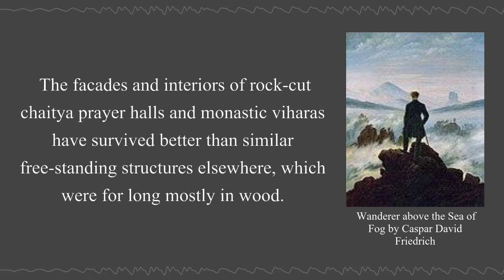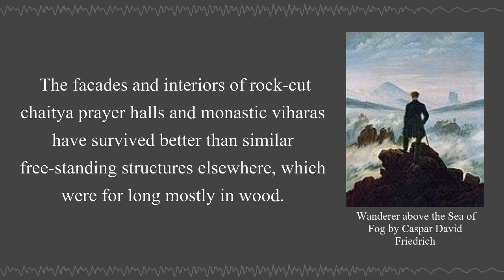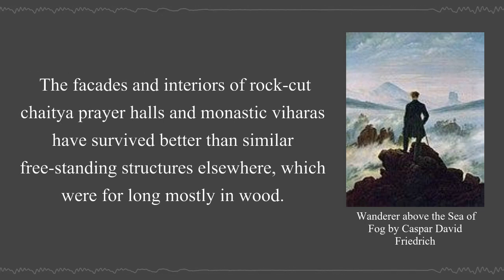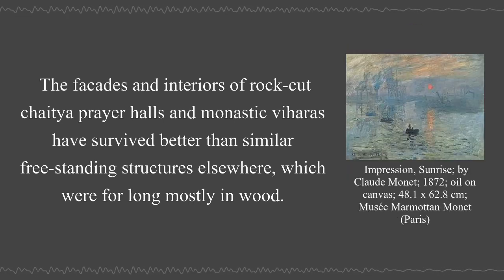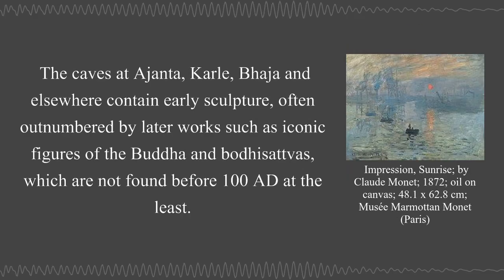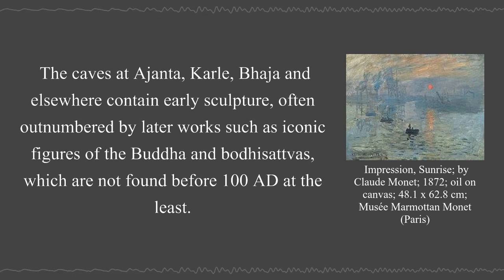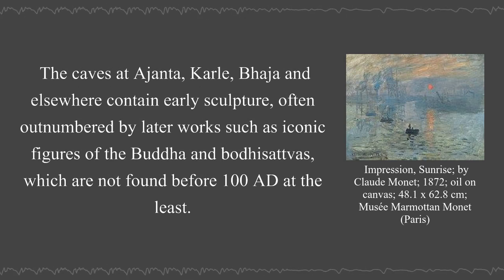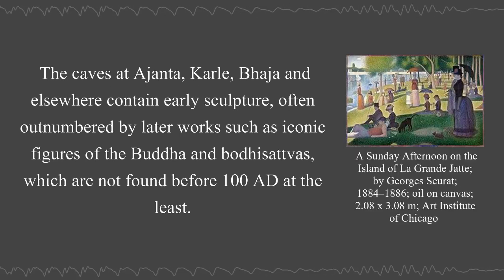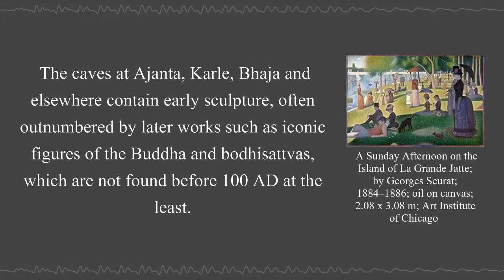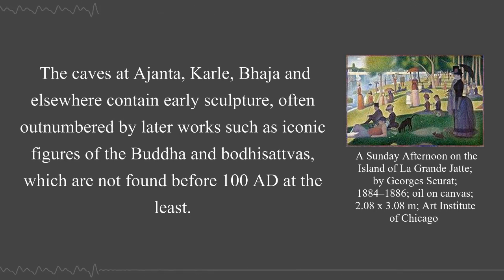The facades and interiors of rock-cut Chaitya prayer halls and monastic viharas have survived better than similar freestanding structures elsewhere, which were for long mostly in wood. The caves at Ajanta, Karla, Bhaja, and elsewhere contain early sculpture, often outnumbered by later works such as iconic figures of the Buddha and Bodhisattvas, which are not found before 100 AD at the least.